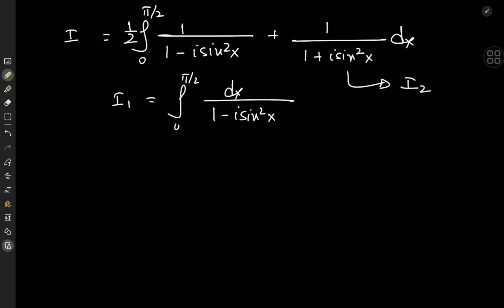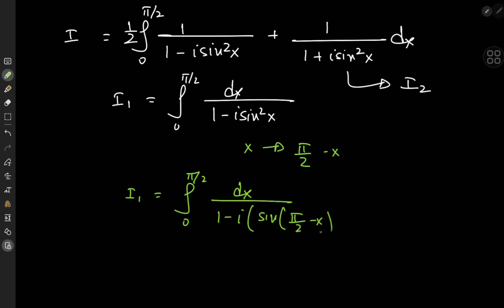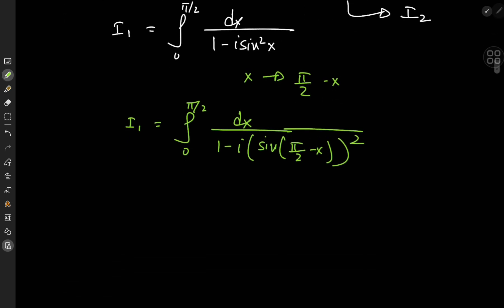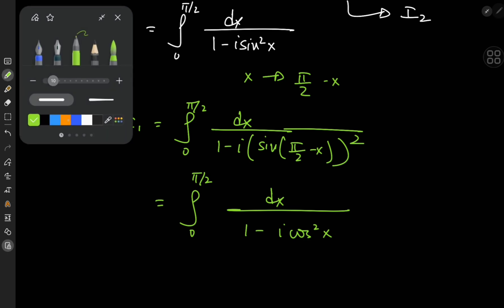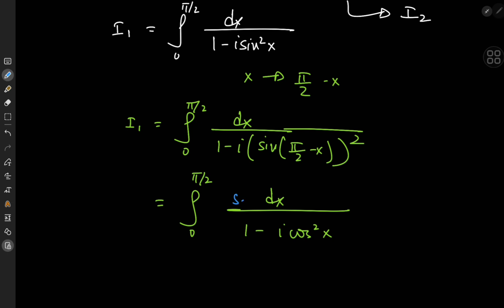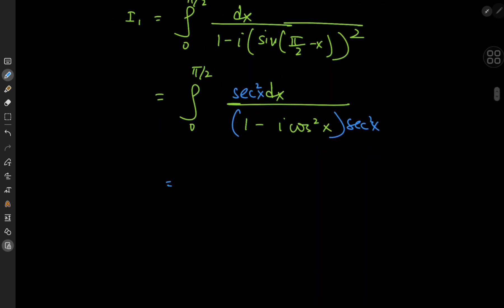For the integral I₁, I'd like to perform a phase shift first, going from the x realm to the π/2 minus x realm. That gives I₁ equal to the integral from 0 to π/2 of dx divided by 1 minus i·sin²(π/2 minus x). And since sin(π/2 minus x) is the cosine, we now have the integral from 0 to π/2 of dx divided by 1 minus i·cos²x.